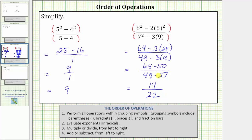The expression simplifies to 14 over 22, but this can be simplified because 14 and 22 share a common factor of two. To simplify, we divide the numerator and denominator by two, giving us the simplified fraction of seven elevenths.